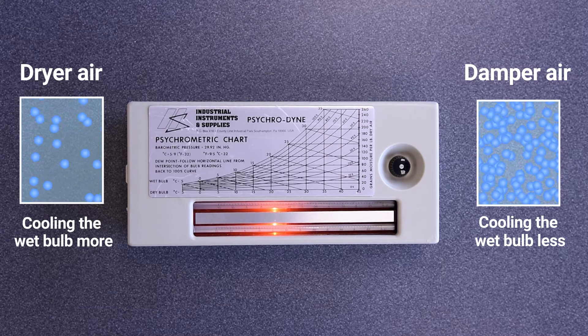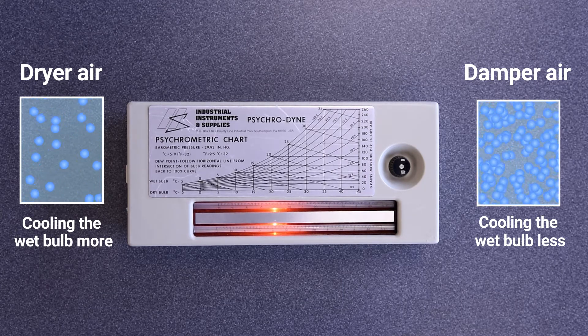Give the instrument two minutes for the wet bulb to reach equilibrium when the mercury stops dropping.